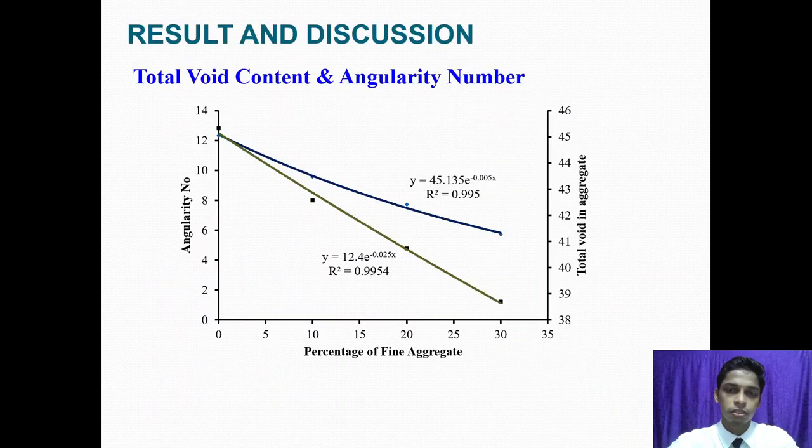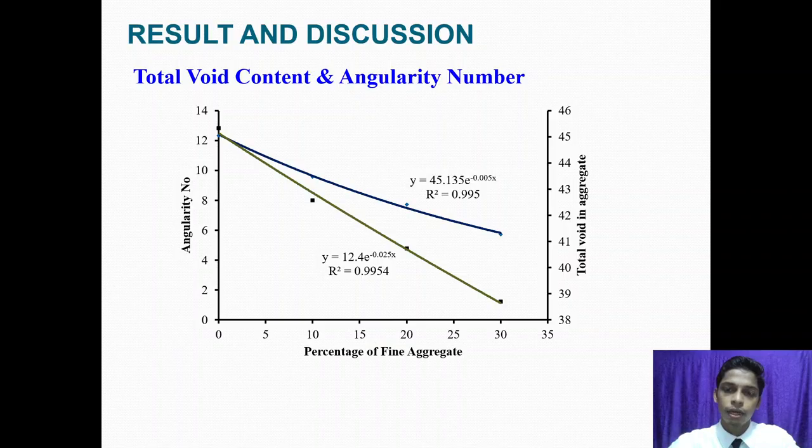Result and Discussion. Blue line represents the angularity number here, and grey line represents the total void in aggregate. As fine aggregate added, the void content and angularity number decreases gradually, due to fine aggregate occupies the void in coarse aggregates. While angularity number varies from 5 to 12, and total void content varies from 38 to 45.